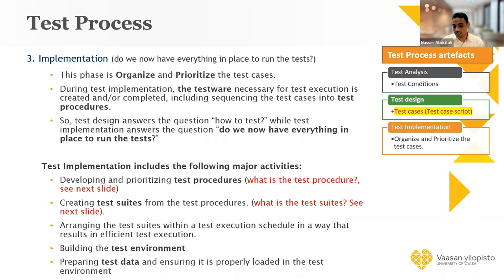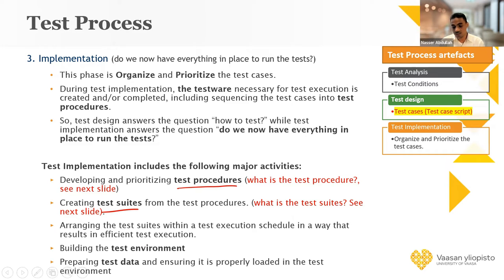So what we have to do in this step — in the implementation — what are the activities over this step? We have to design something with the test procedure. Also, we have to create the test suite if needed. We also have to rearrange the test suite within the execution schedule. We have a schedule we should follow. Now we build the test environment, and we also prepare the test data.